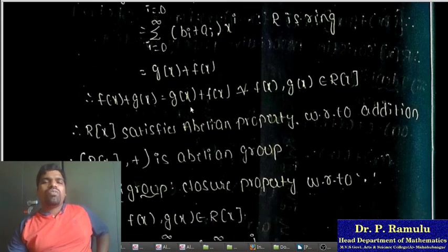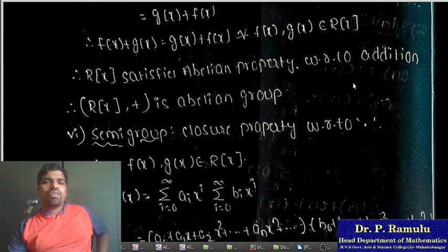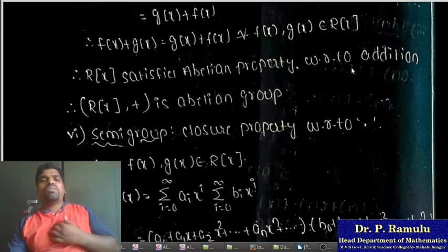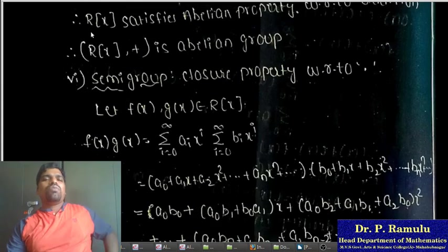R[x] also satisfies the abelian property with respect to addition, i.e., f(x) + g(x) = g(x) + f(x). Therefore R[x] with addition is an abelian group.